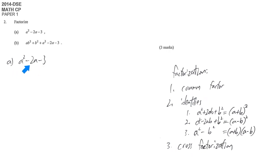So here there is no common factor and it is not an identity because 3 is not a square term. So we have to use the last method which is the cross factorization.